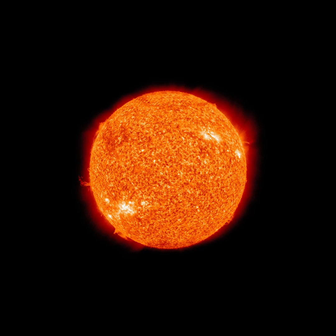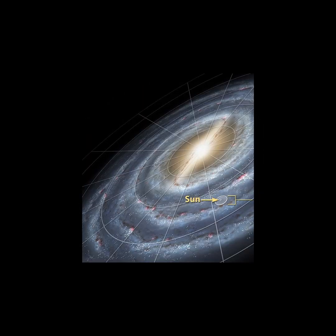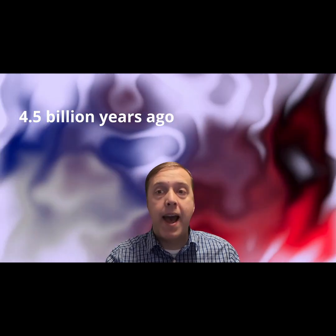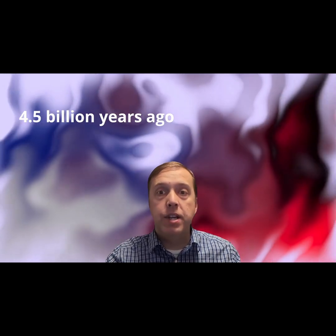Our Sun is located within the Milky Way galaxy about 26,000 light years from the galactic center, or midway out to the periphery. However, our Sun is much younger, having formed four and a half billion years ago.